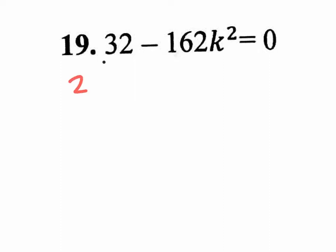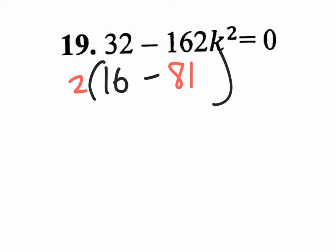Pull out a 2. We're going to have 16 left over, and that's great because that's a perfect square term. And 162 divided by 2 is 81, or 2 times 81 gives you 162. We still have the K squared right there. So on the inside of the parentheses, we now have perfect square terms that we could use a shortcut on.